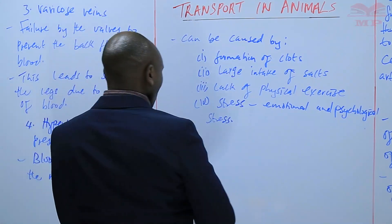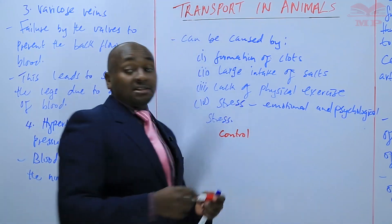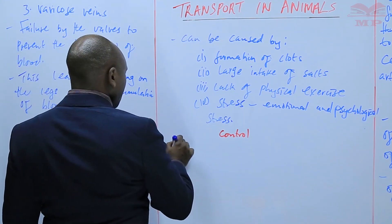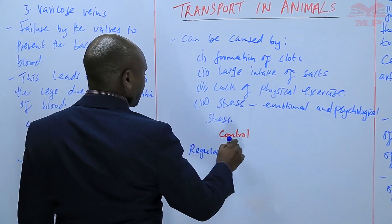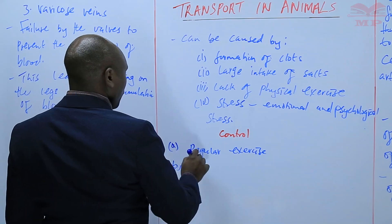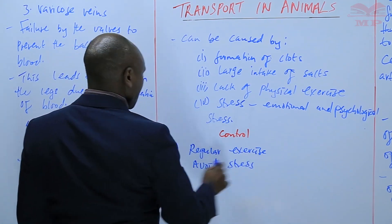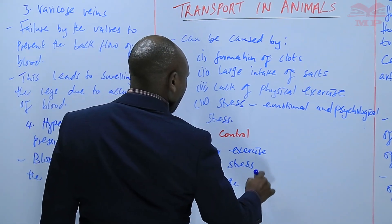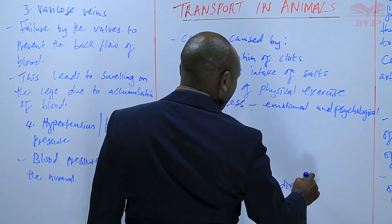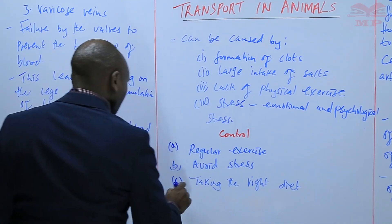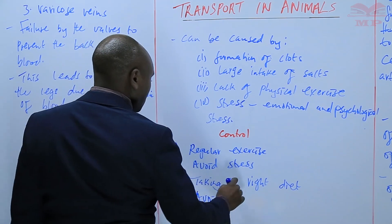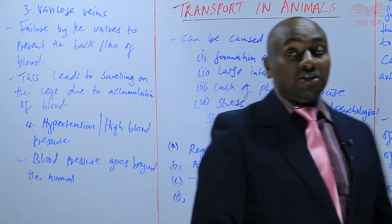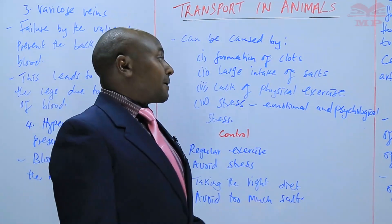Hypertension can also be caused by stress — that is emotional and psychological stress. To prevent or control these diseases, also known as cardiovascular diseases or diseases of the circulatory system, the control is by regular exercise, avoiding stress, taking the right diet at the right quantities, and avoiding too much salt.